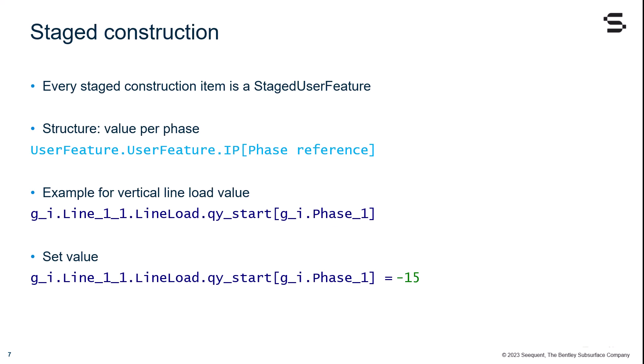Therefore, coming back to the example for the vertical line load value, the Python command is as we already saw before: g_i.Line_1_1.LineLoad.qy_start[g_i.Phase_1]. That is, as we are already targeting the line, which has the staged user feature line load, for which we want to access the qy_start intrinsic property for phase 1. And to set it to a specific value, we simply need to use the equal sign, which for Python is used as the assignment symbol, relevant to the Plaxis command set.